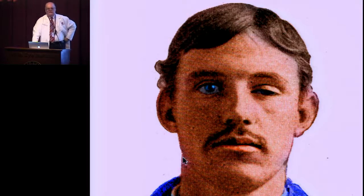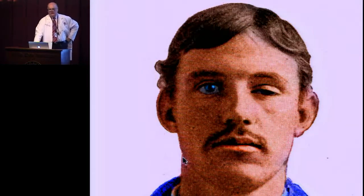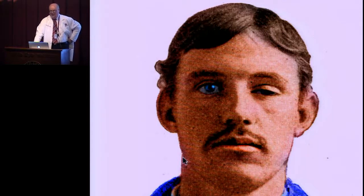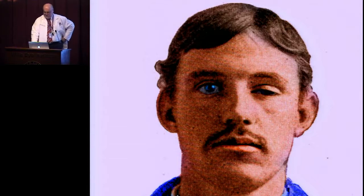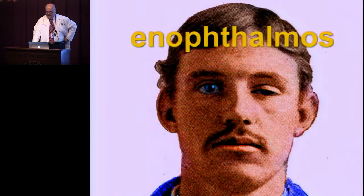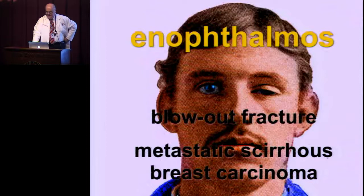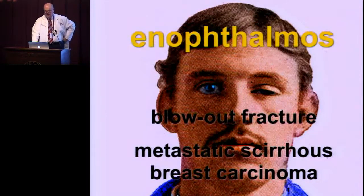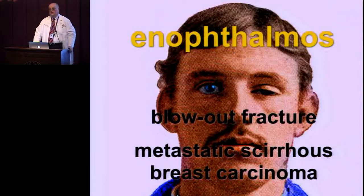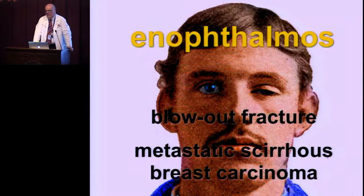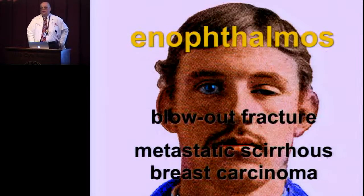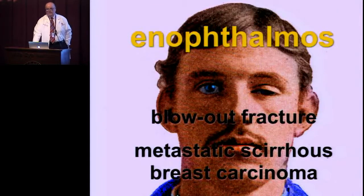Things behind the globe in the muscle cone or retrobulbar tissues tend to cause axial proptosis. The one exception to exophthalmos or proptosis is enophthalmos. The classic cause is blowout fractures. Certain sclerosing neoplasms, like sclerosing breast carcinoma or sclerosing carcinoma of the eccrine sweat glands, can also cause secondary enophthalmos.